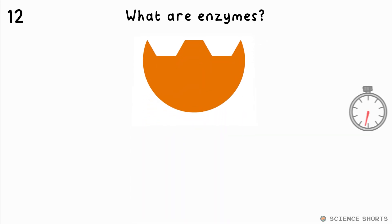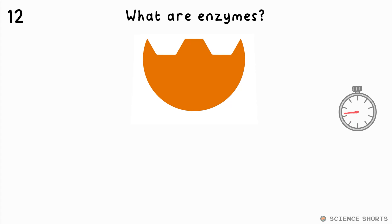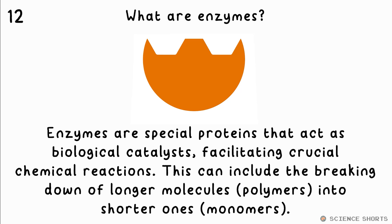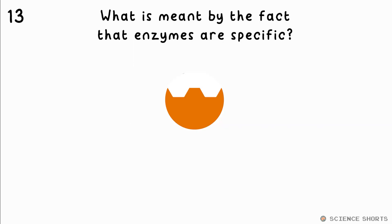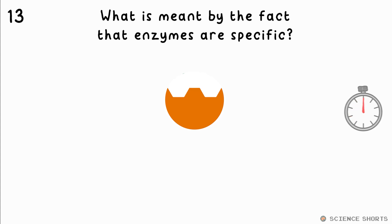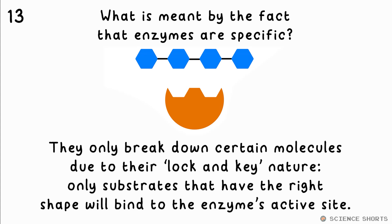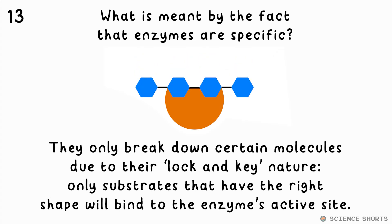What are enzymes? Enzymes are biological catalysts. They facilitate crucial processes in your body, such as breaking down polymers into monomers — for example, starch into glucose. What does it mean when we say that enzymes are specific? This means they only break down certain molecules due to their lock and key nature. Only specific substrates — that's the molecule being broken down — will bind to the enzyme's active site in order to be broken down.